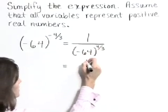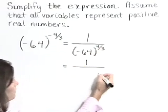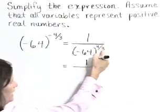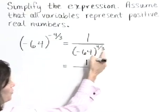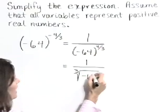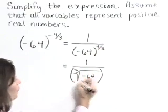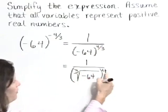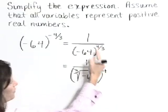Now let's begin to evaluate. This is 1 over, this 3 in the denominator of our exponent is our root, so we can write this as a cubed root of negative 64 raised to the 4th power. That numerator of the exponent is a power.